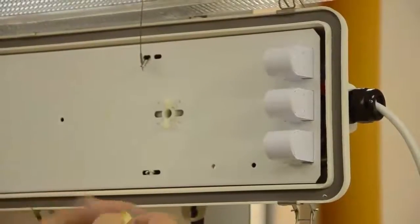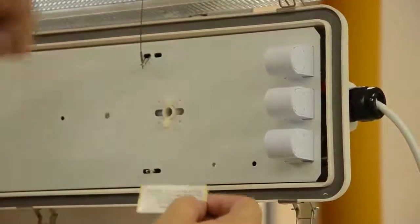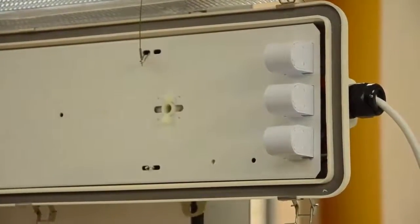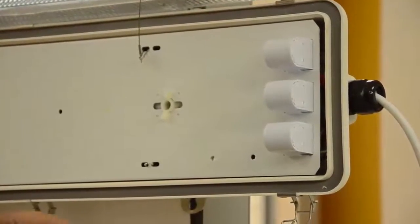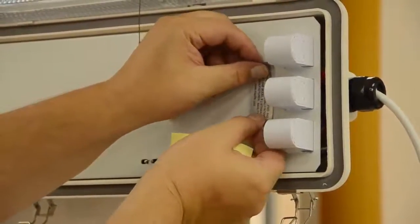Now before we put in our LED T8 lamps, I'm going to apply this label. This label is going to warn the next guy down the road 15, 20 years from now that when he does maintenance on this fixture, that there is direct line voltage on these sockets.